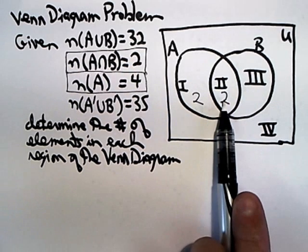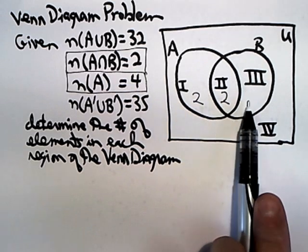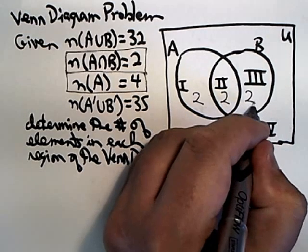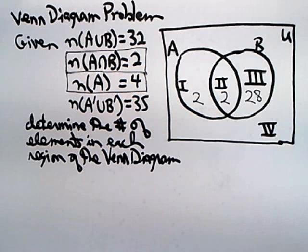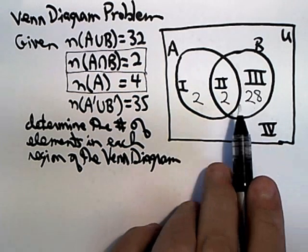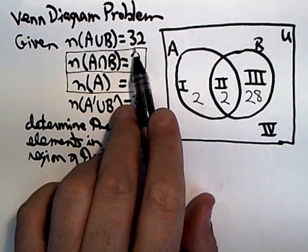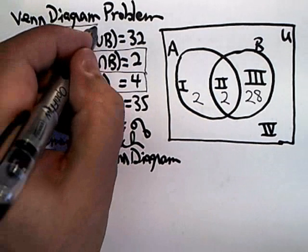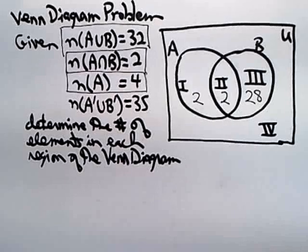Well, 2 plus 2 is 4, so you've got to figure out 4 plus what equals 32, and with a little bit of arithmetic, you can figure out that must be 28. Now, 28 plus 2 plus 2 is 32, and that agrees with this statement.